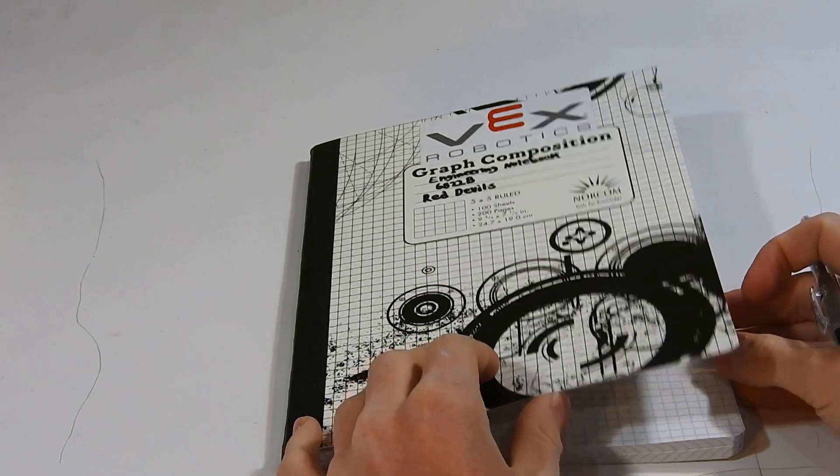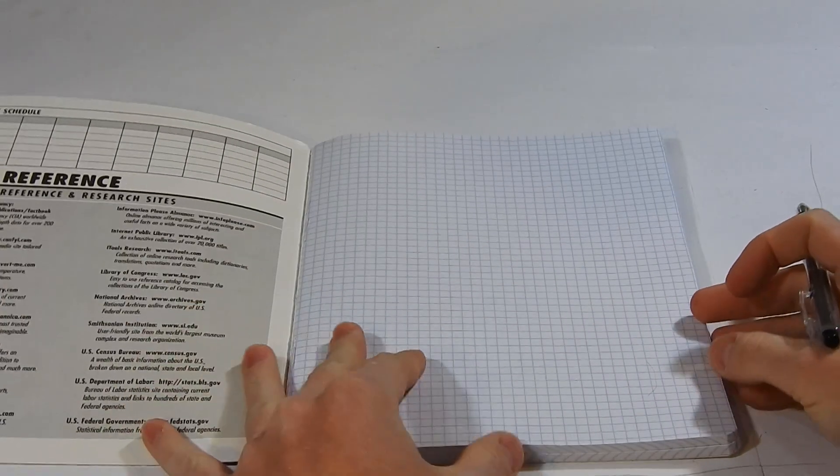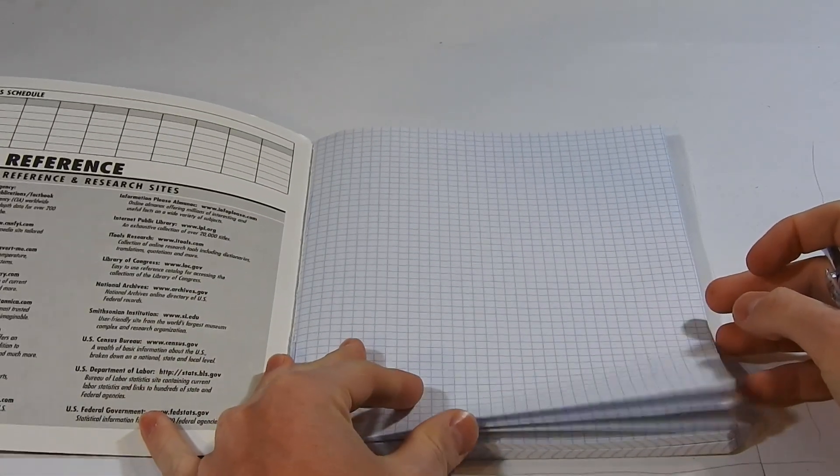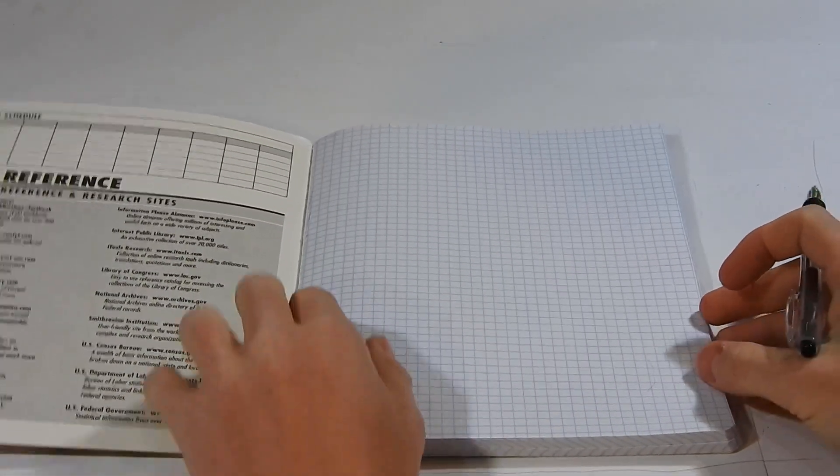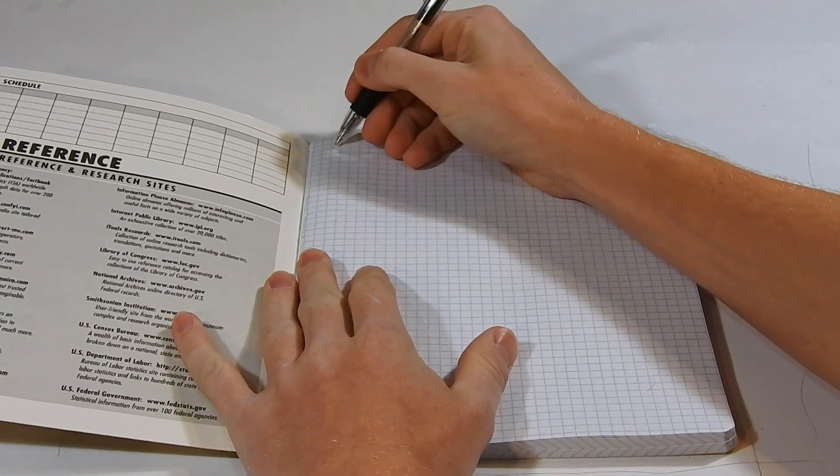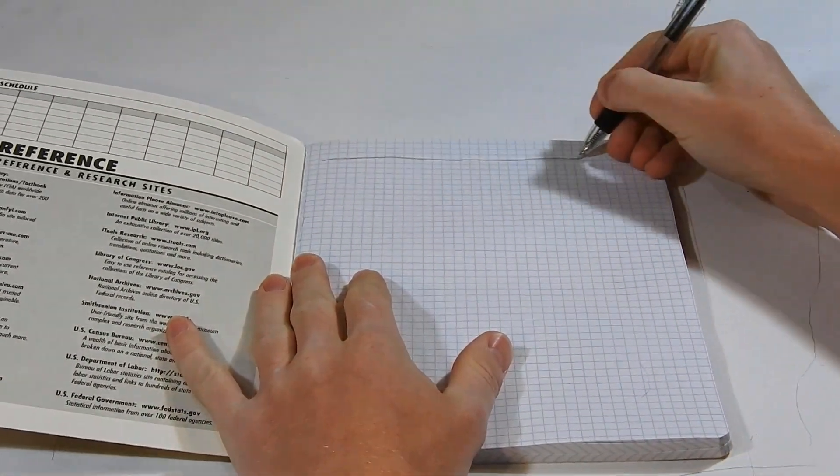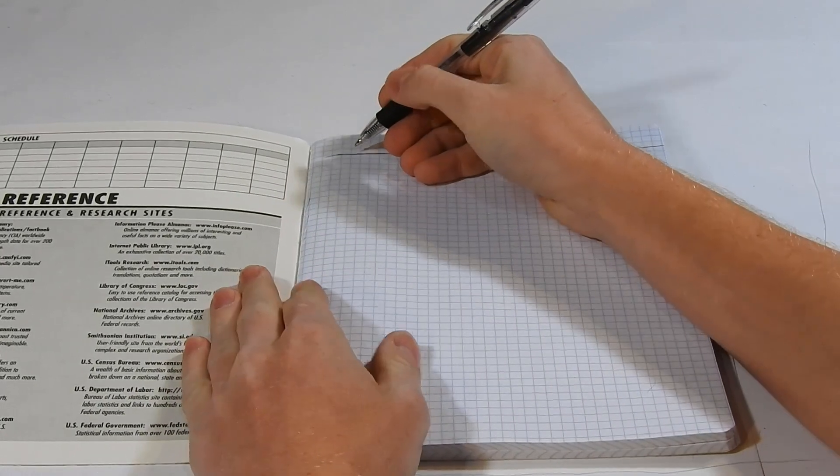The next thing we're going to do is open up the Engineering Notebook. The first three to four pages are going to be table of contents. You're going to start by drawing a line across the top.